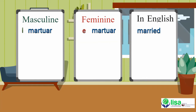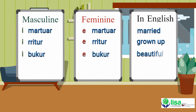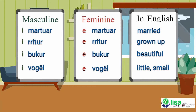Class 2 adjectives shown with masculine and feminine forms: i martuar / e martuar (married); i rritur / e rritur (grown up); i bukur / e bukur (beautiful); i vogël / e vogël (little or small).